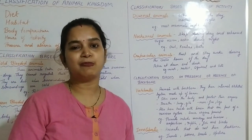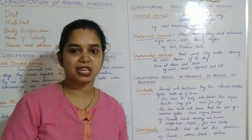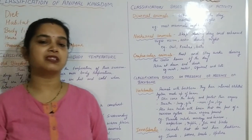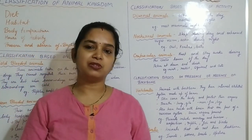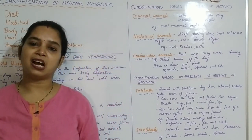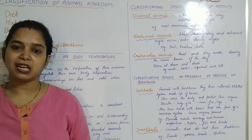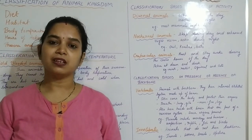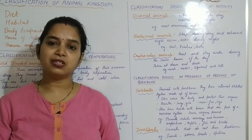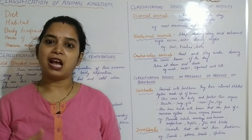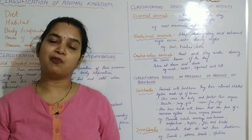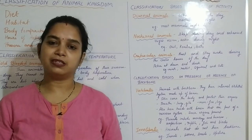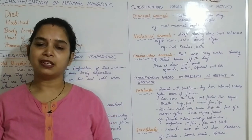Today we studied about the classification of animals according to five features: diet, habitat, hours of activity, the presence and absence of backbone, and whether they are warm-blooded or cold-blooded. Thank you.